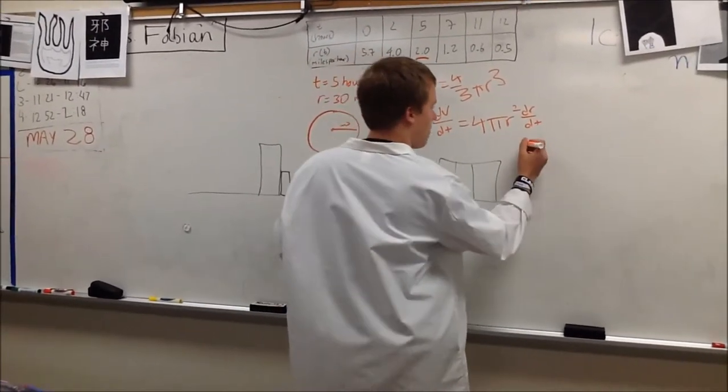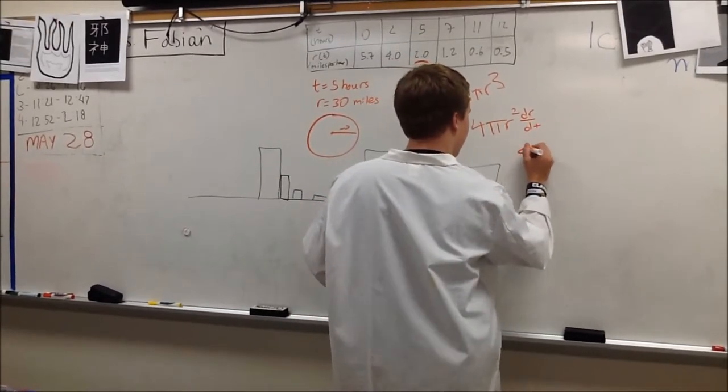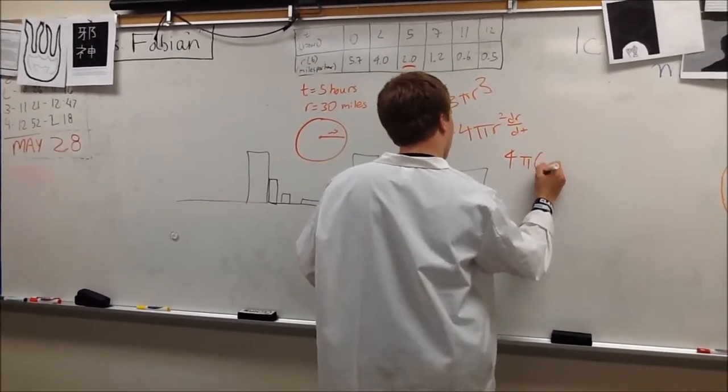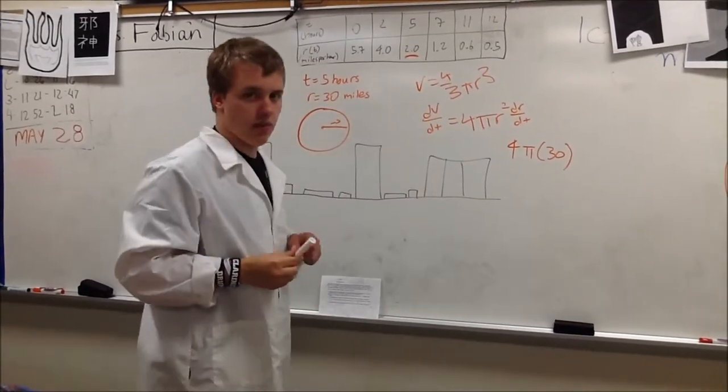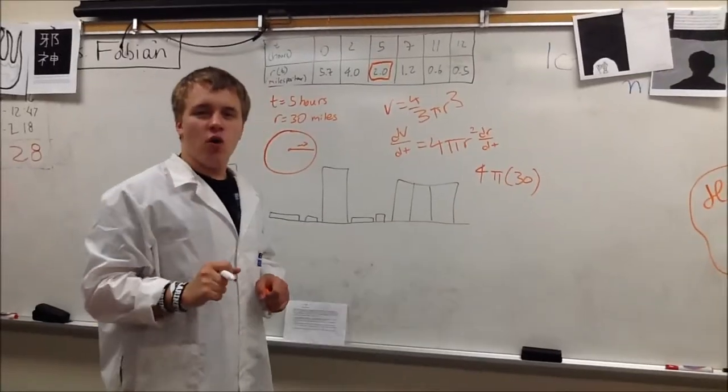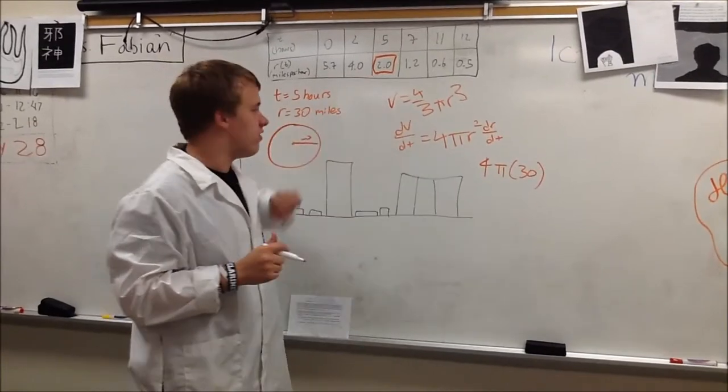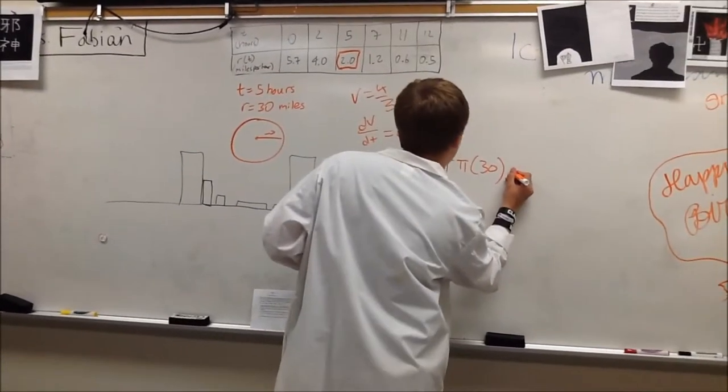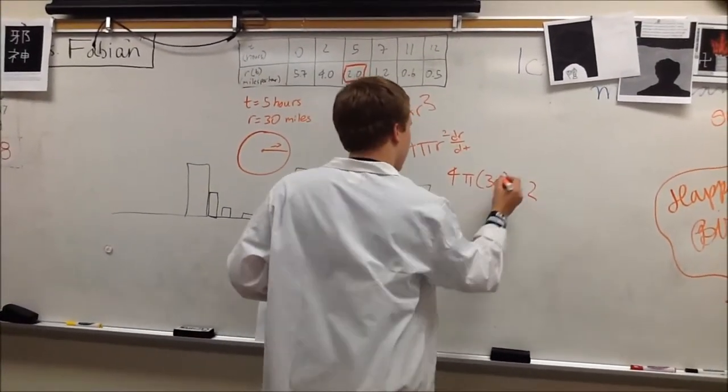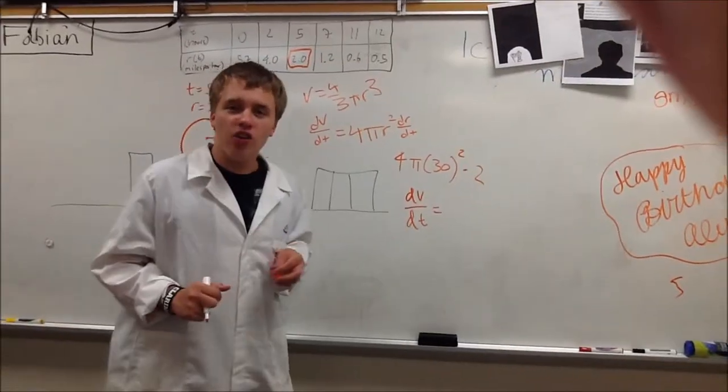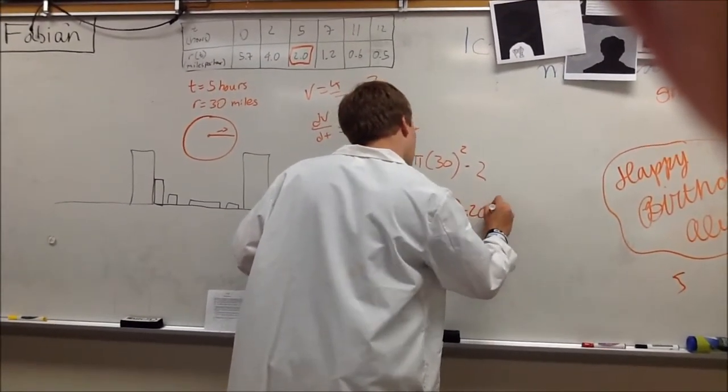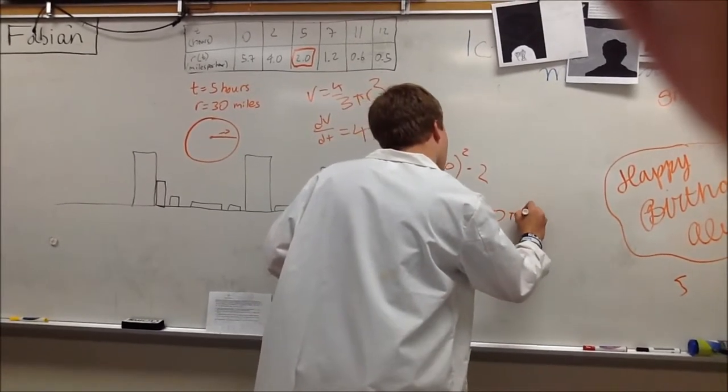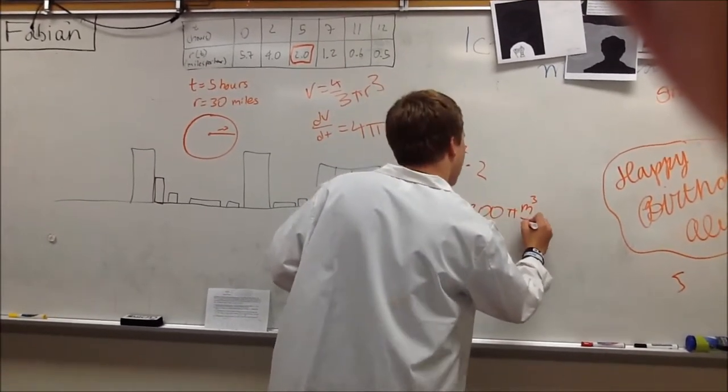So we know that if we replace r with 30, because at 5 hours the radius is 30 miles, then we know that dr dt is 2. So we multiply that by 2. That's squared. So if we plug all this into our calculator, we get 7,200 pi miles cubed per hour.